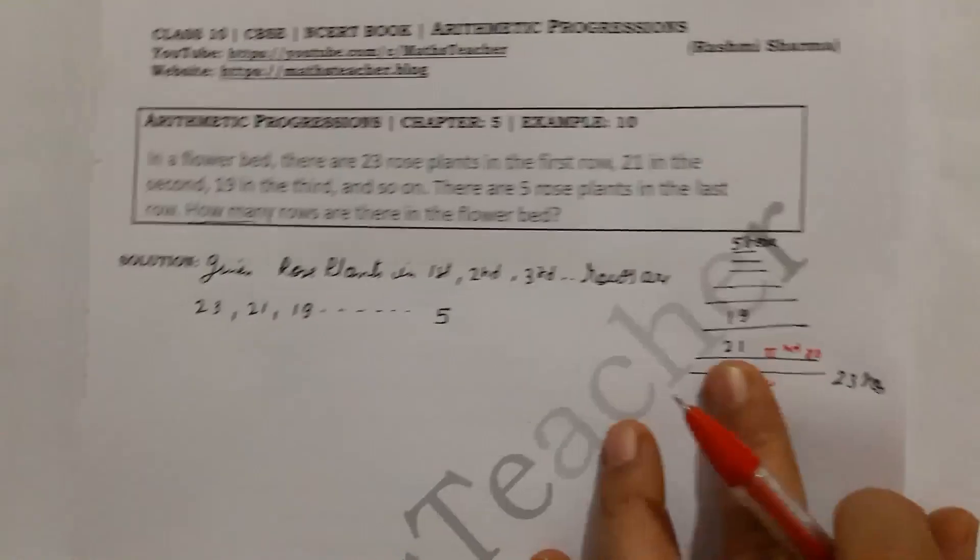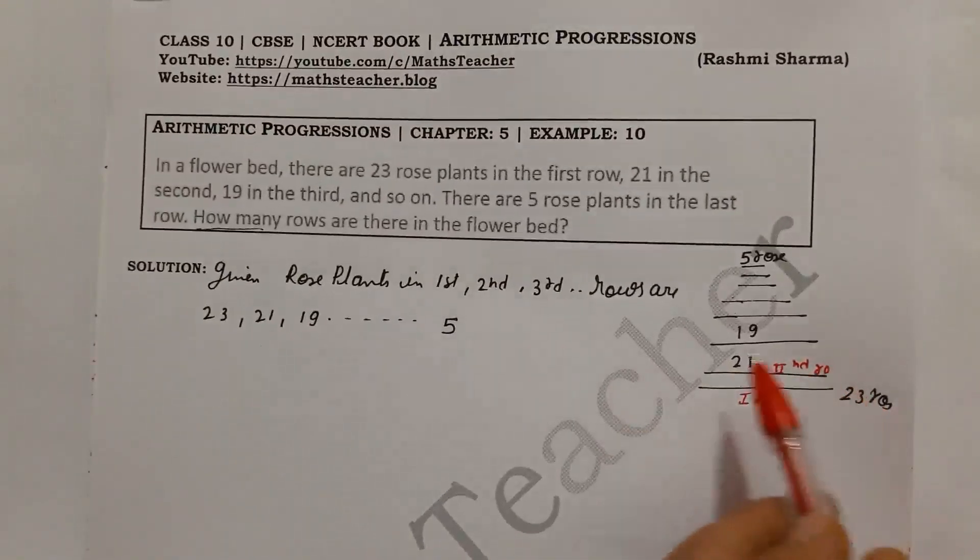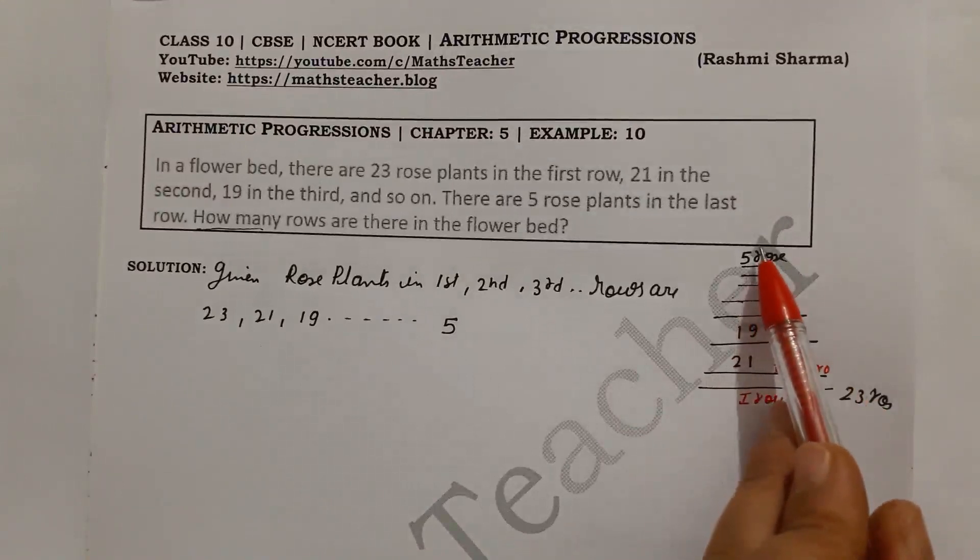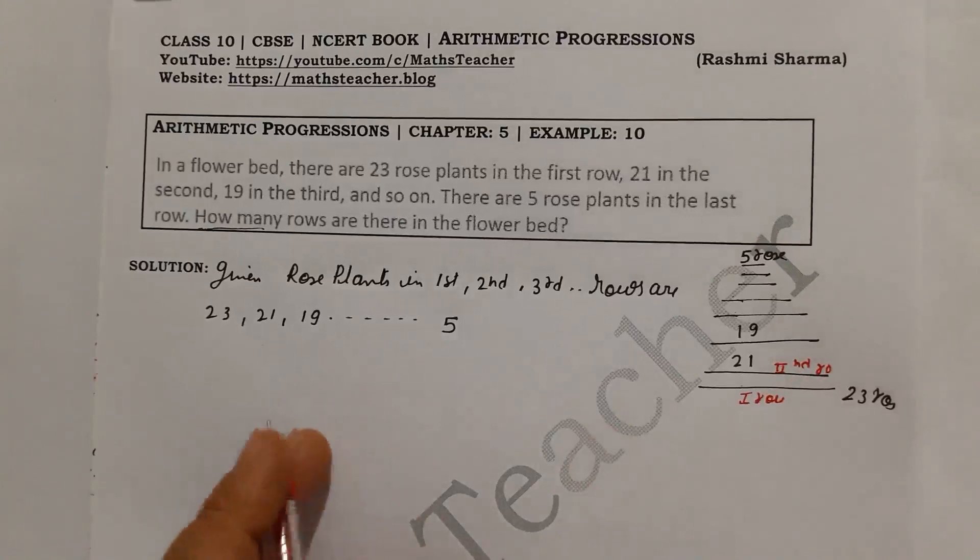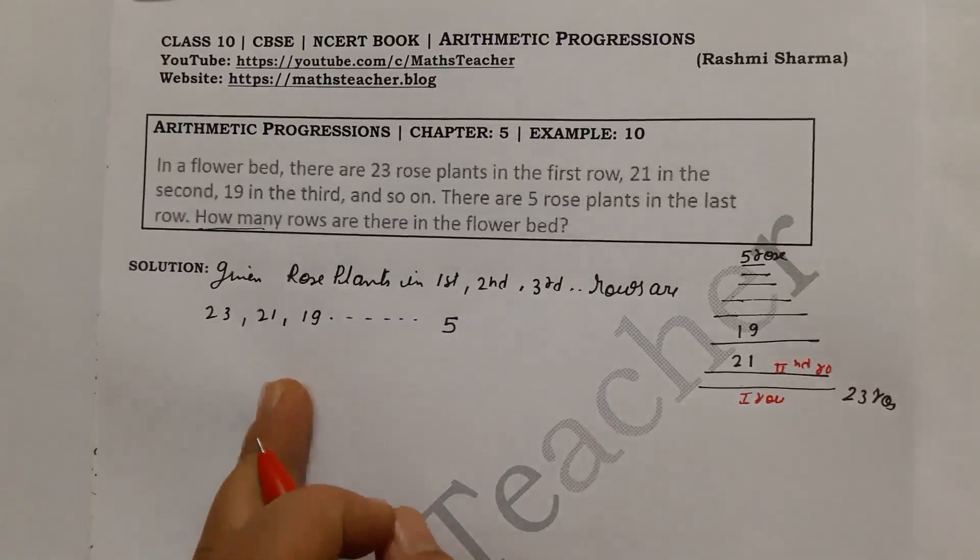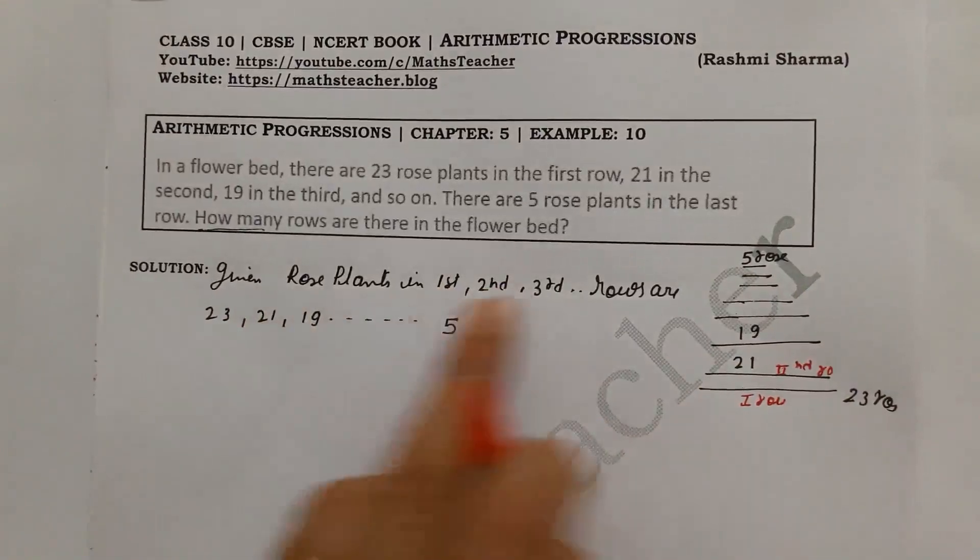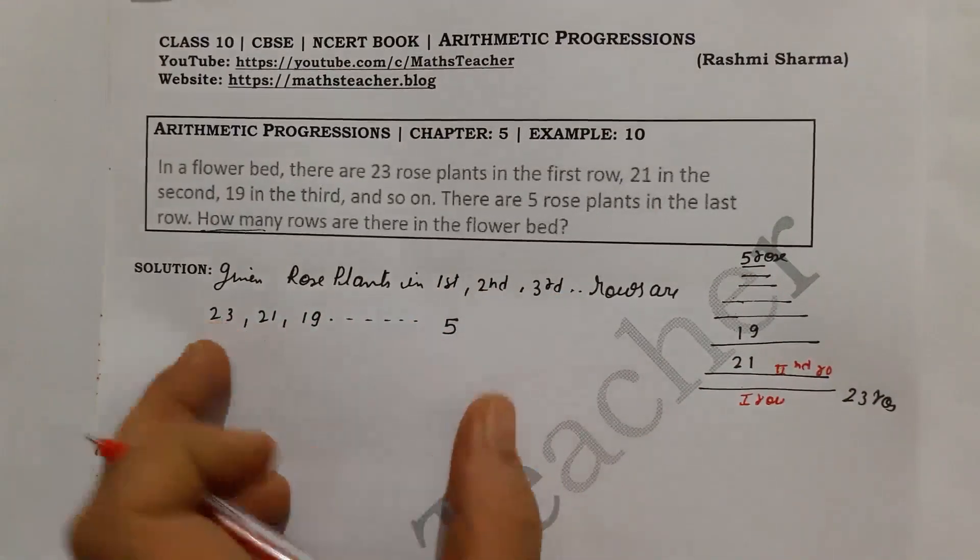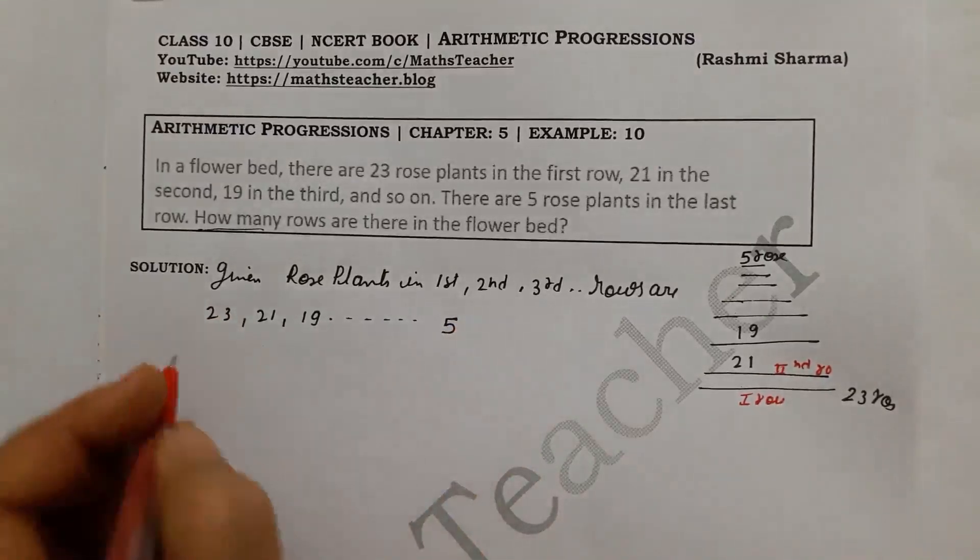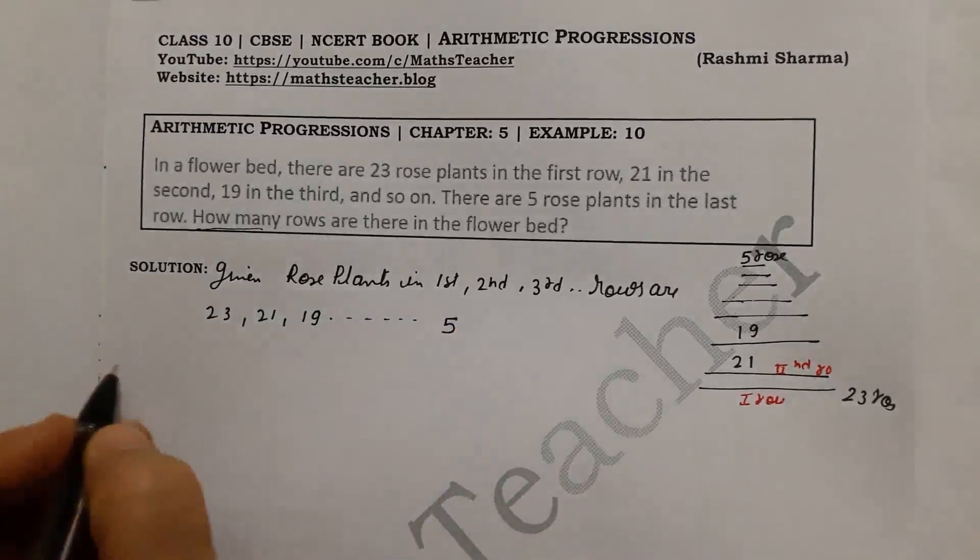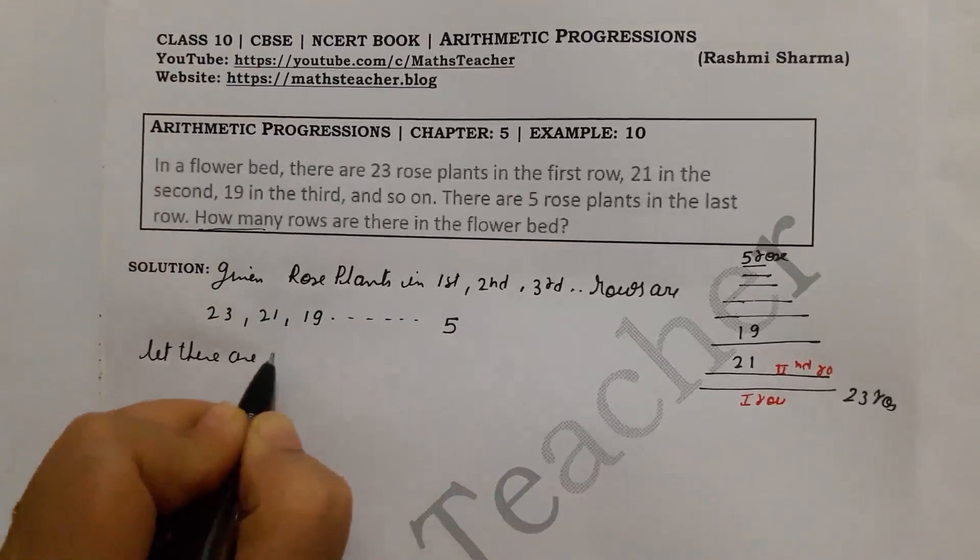We have this sequence: 23, 21, 19, and so on down to 5. We need to find the total number of rows. Let there be n rows in the flower bed.